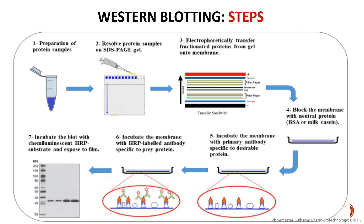This is the basic diagram for Western blotting. We separate the protein using SDS-polyacrylamide gel electrophoresis, then transfer it to a membrane, block it using bovine serum albumin or casein, and use primary and secondary antibodies labeled with horseradish peroxidase and a coloring agent.